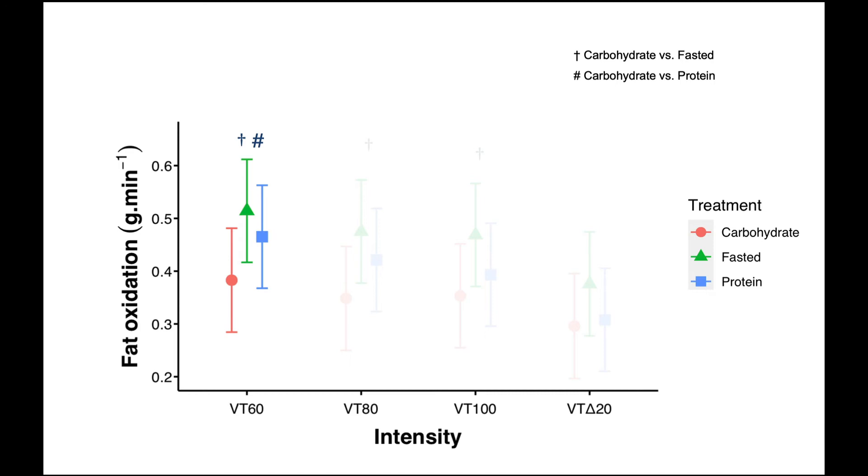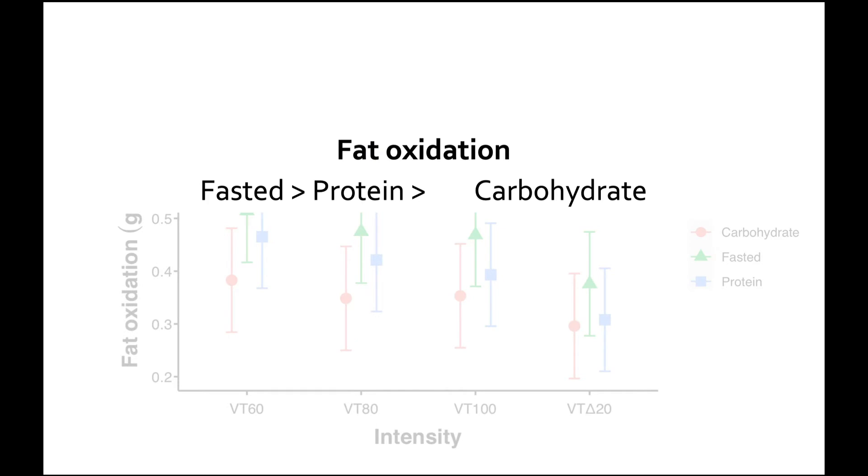So as we continue on the intensities, the same pattern holds true, although the differences between groups diminish a bit. As you can see, as the intensity increases, generally fat oxidation rates decrease. What we can say is in terms of fat oxidation, fasted state has the highest, protein is similar to fasted though slightly less, and both of them are far greater than carbohydrate.